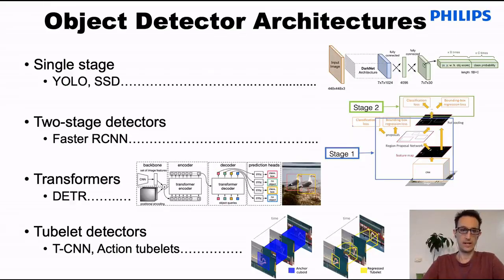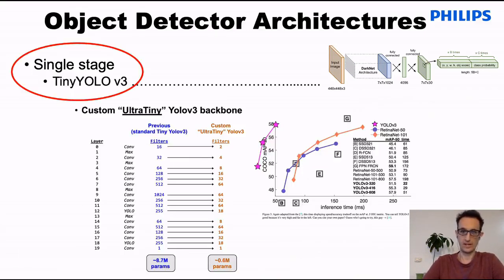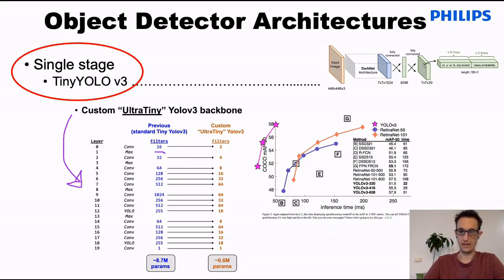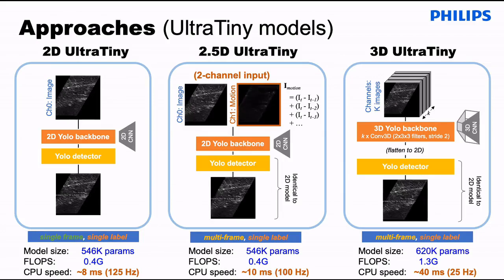In this work, we needed to decide what sort of backbone detector architecture to use, including a single stage or two stage detector, a data or transformer model, or a tubelet detector. We opted for the tiny YOLO v3 model, and we went one step further where we created an ultra-tiny version by downsampling every feature map by a factor of 8. In the end, we ended up with a backbone that had just over half a million parameters.